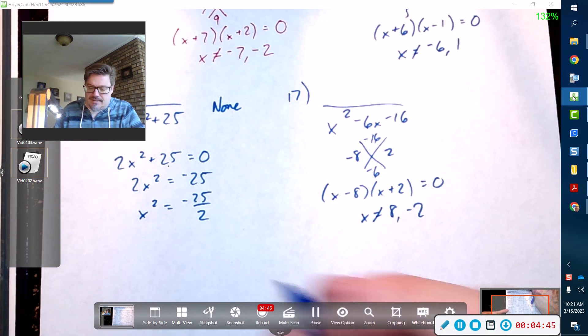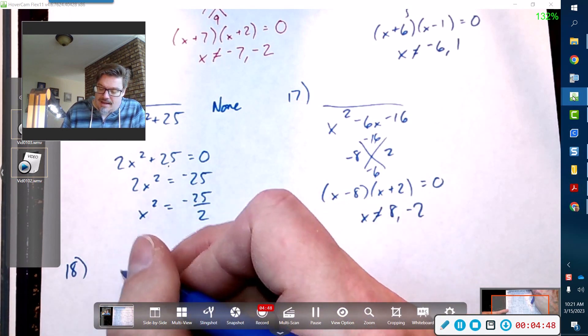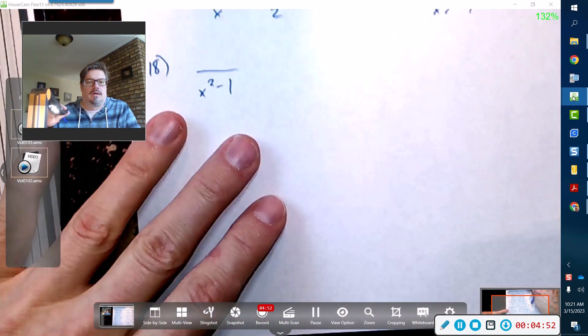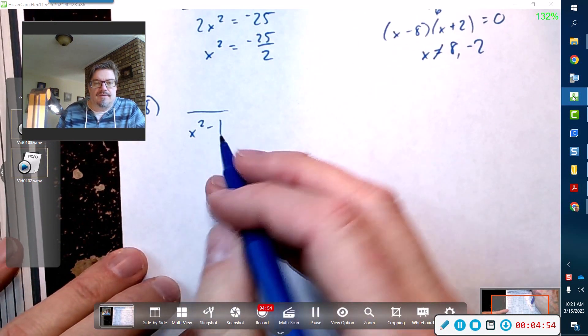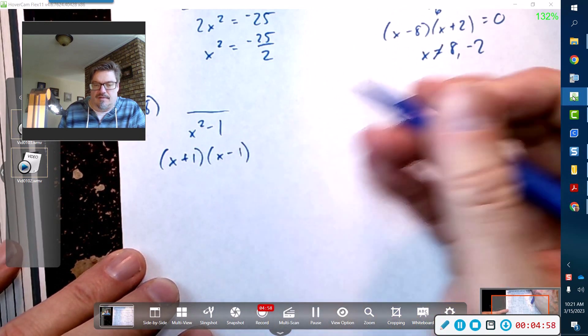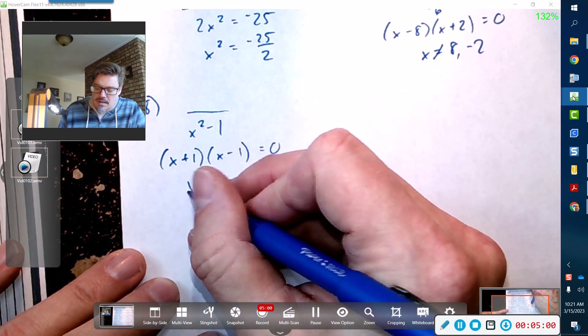This is going to continue. Problem 18, again I'm just going to focus on that denominator. This is the difference of two squares, so that's (x + 1)(x - 1). You guys factored that many times. That's negative 1 and 1. Again, x cannot equal those numbers.